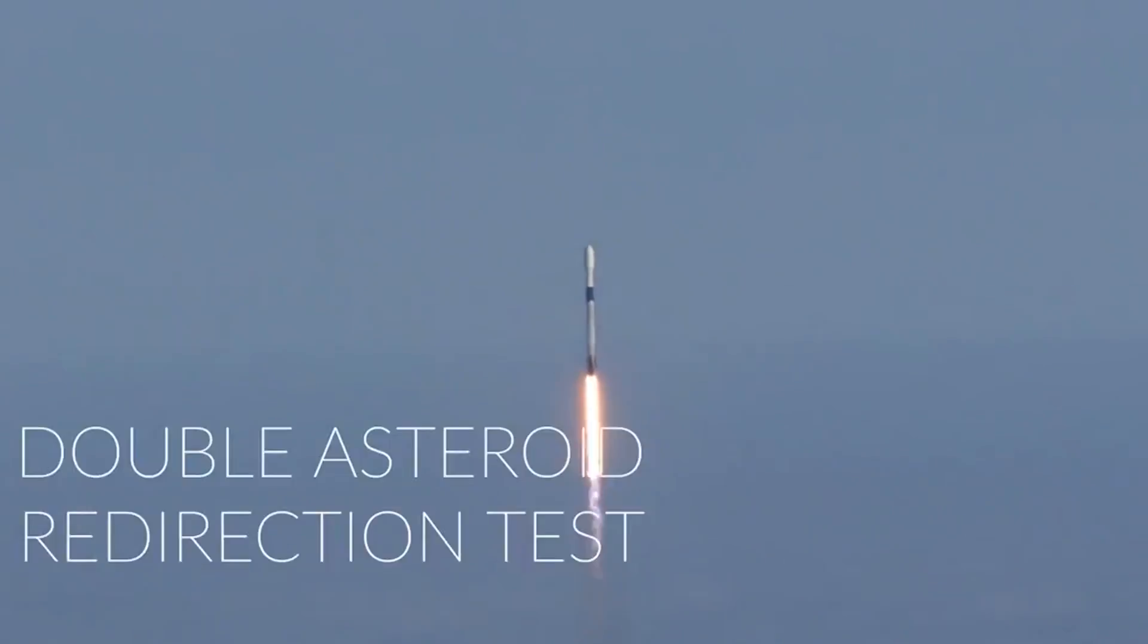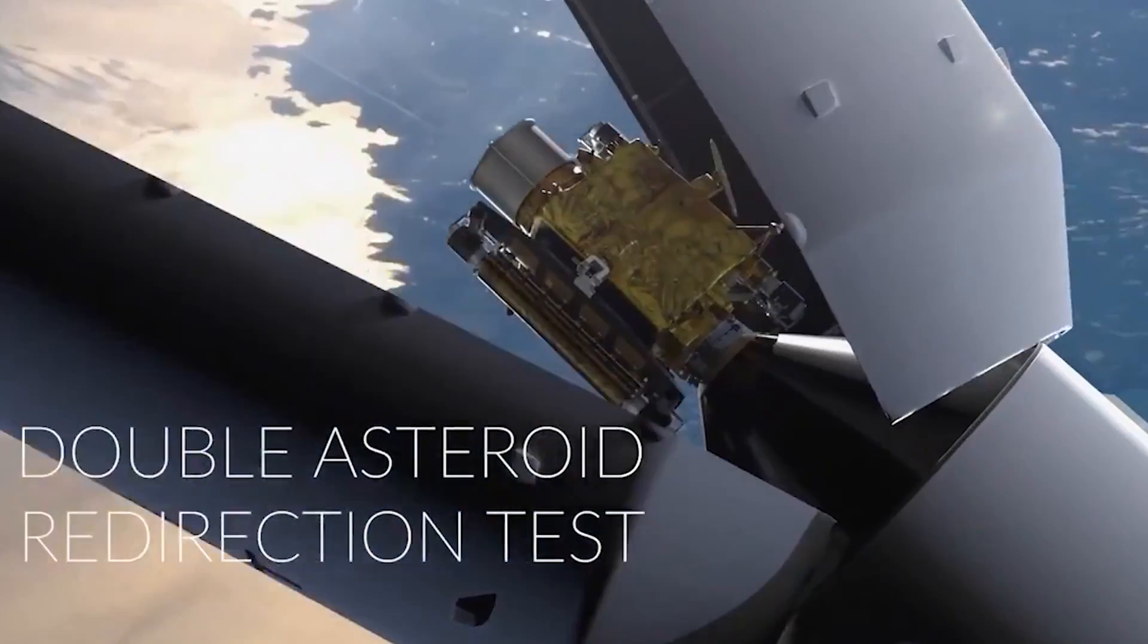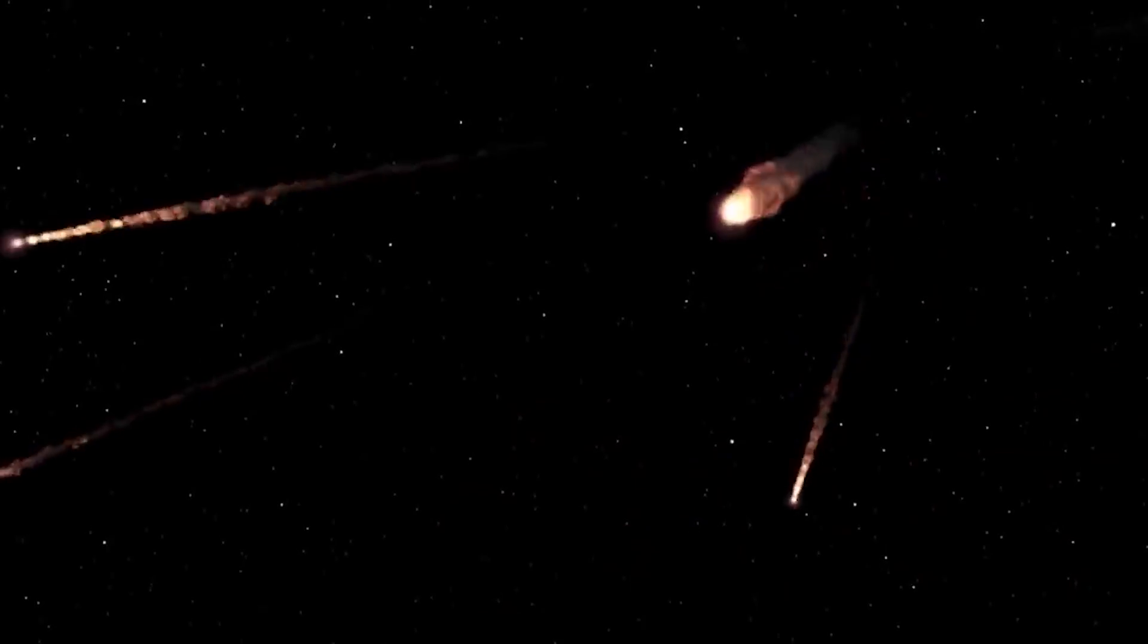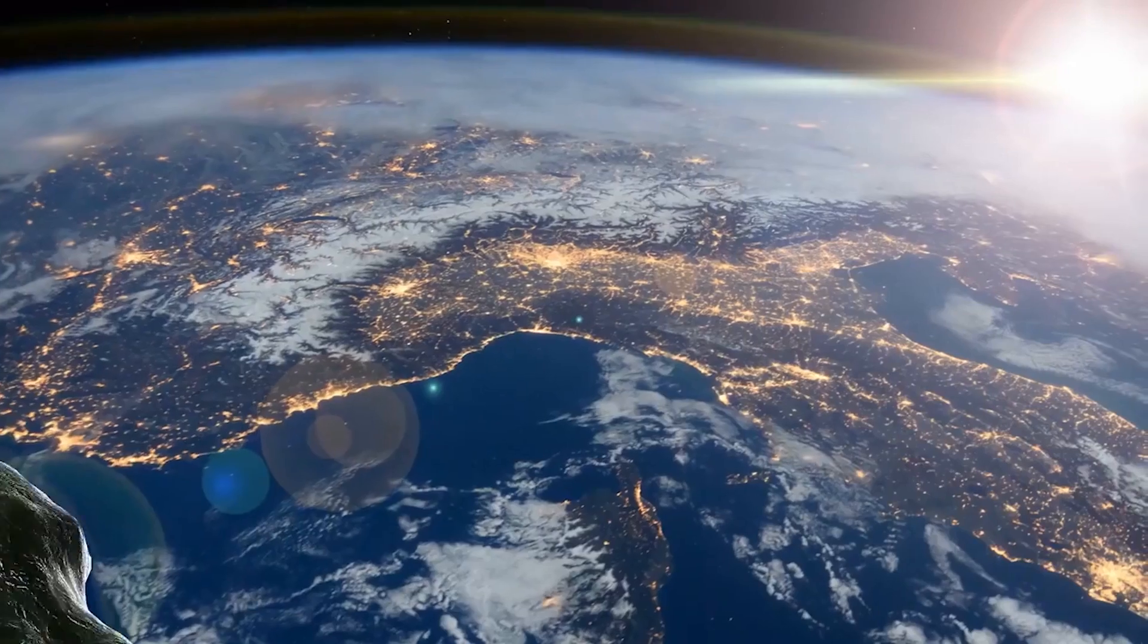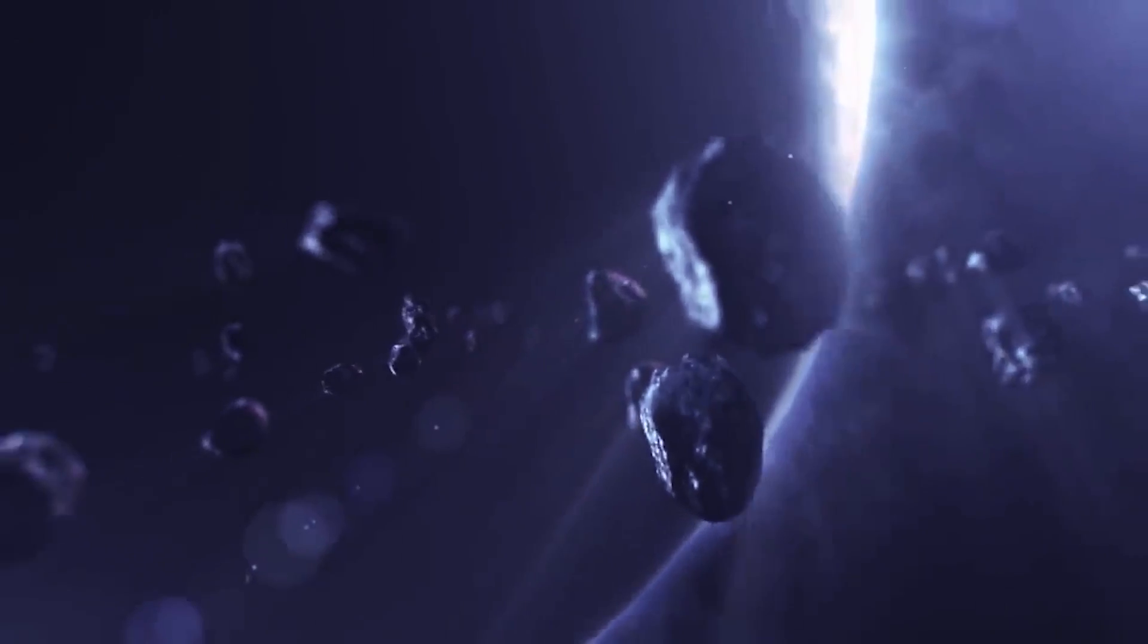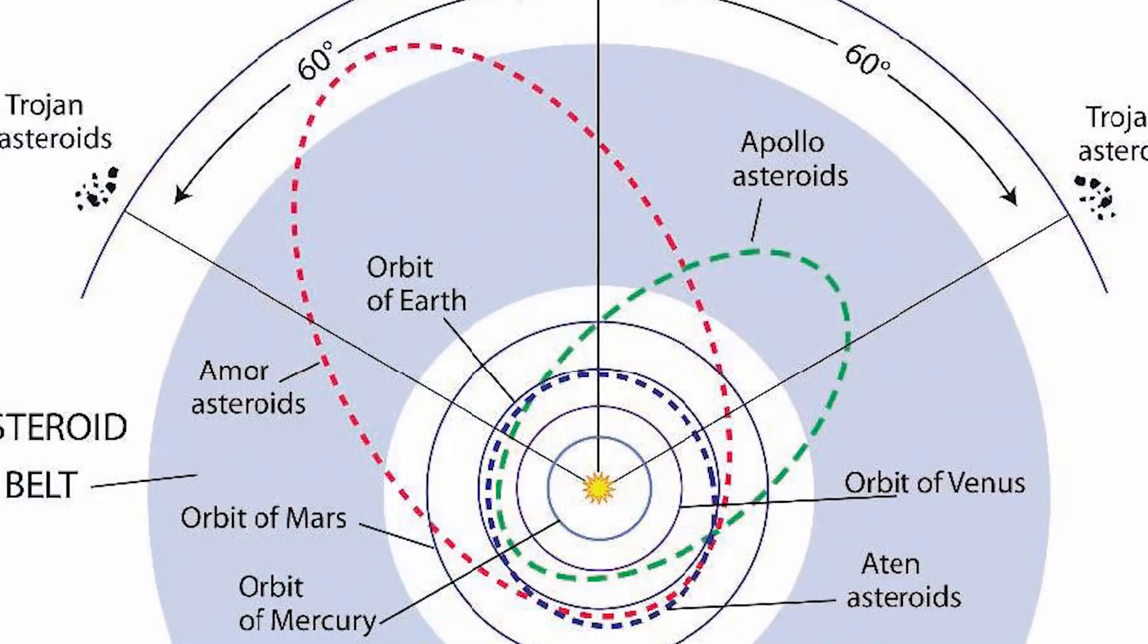These and other such programs have been necessary not just because of the imminent passing of Apophis, but because there are tens of thousands of Apollo, Aten, and Atira group of asteroids in our solar system. Apophis currently belongs to the Aten class of asteroids.